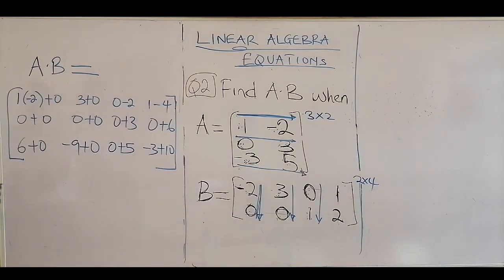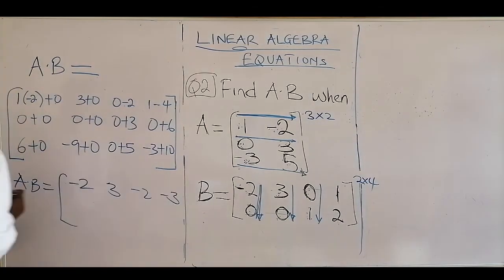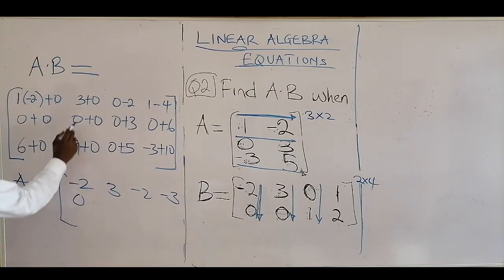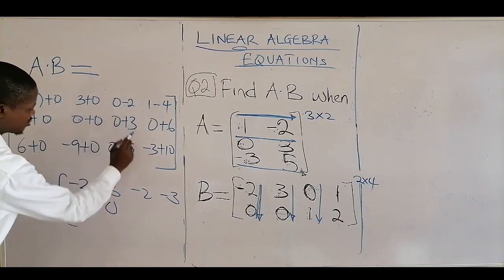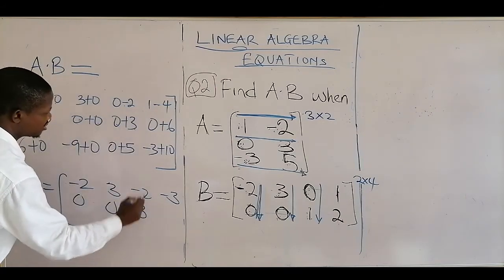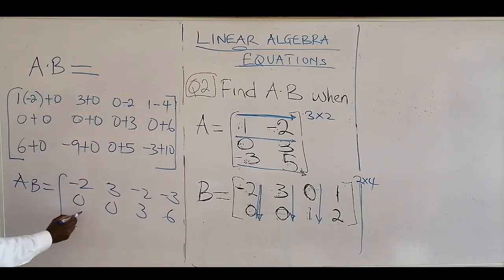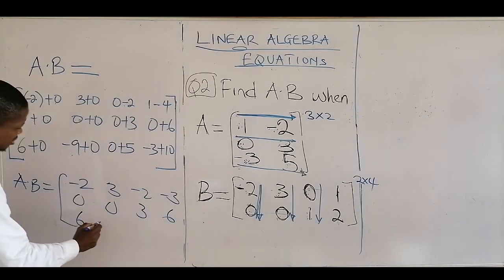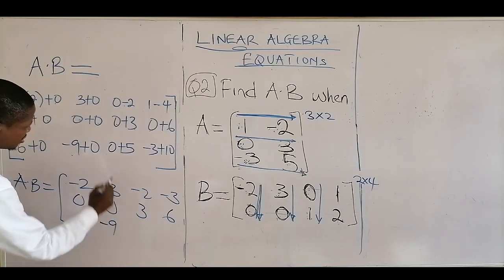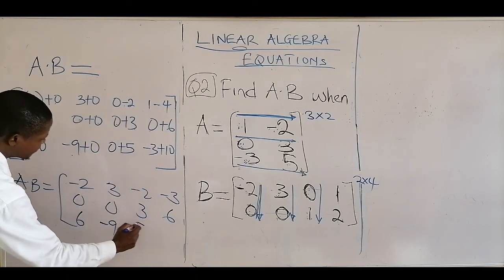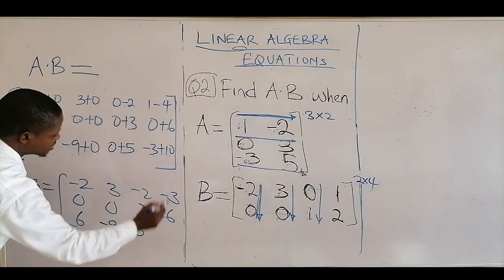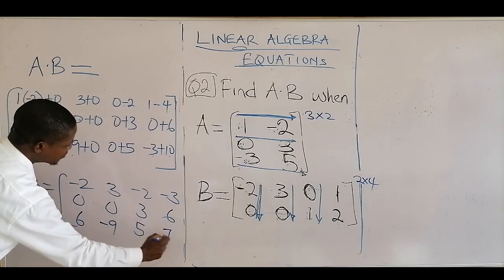So the final answer, A dot B, is equal to: first row: minus 2, 3, minus 2, minus 3; second row: 0, 0, 3, 6; third row: 6, minus 9, 5, 7.